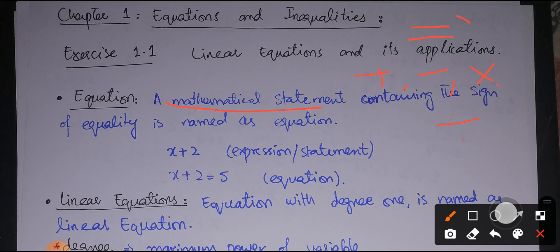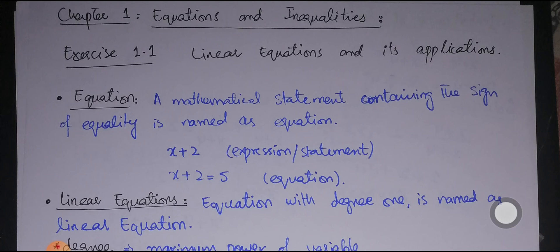For example, 'x plus 2' is a simple mathematical expression or statement, but not an equation. But if we say 'x plus 2 is equal to 5,' now this statement becomes an equation because it contains the sign of equality. So a mathematical or algebraic statement with a sign of equality is named as an equation.